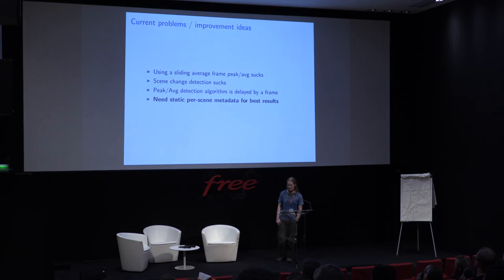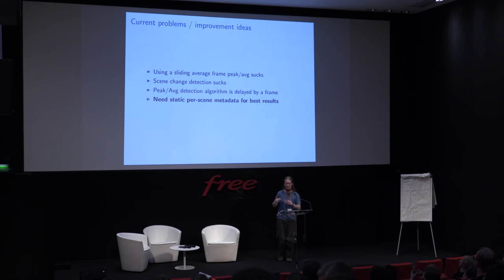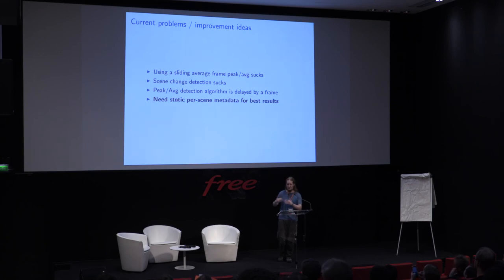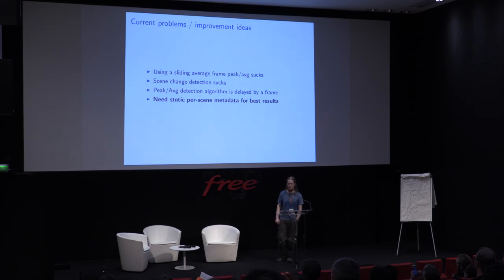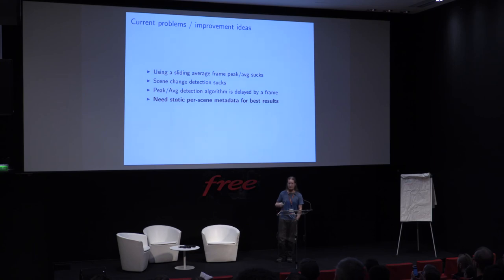Basically what I think needs to be improved: first, this peak detection algorithm using compute shaders sort of works, but it's also very brittle. It has a lot of problems, especially a sort of eye-adaptation-like effect because I use time averaging. I implemented an algorithm that tries to detect scene changes, but that also doesn't really work reliably — sometimes you end up switching from a dark scene to a bright scene and it throws off the averaging. I would really like to remove all of this over-engineered peak detection. What we really need is static per-scene metadata — metadata about the histogram, the average and the peak on a scene-by-scene basis. If we had metadata like that it would make this problem go away. Sadly, we don't currently, because that is not in HEVC metadata, and not in Blu-ray either as far as I'm aware.